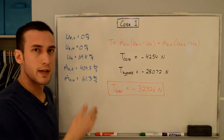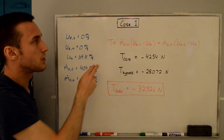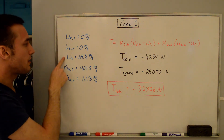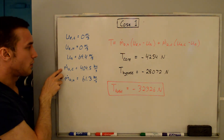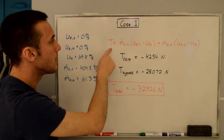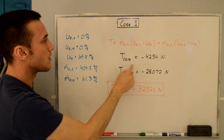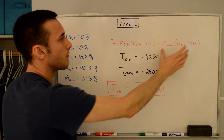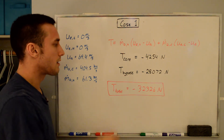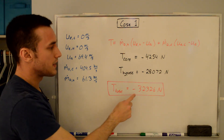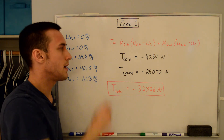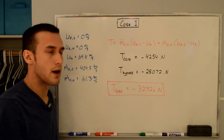Going through case one: both streams are deflected, so exit velocities are zero for both, flight velocity is 69.4 m/s, and the mass flow rates are 61.3 kg/s for the core and 404.5 kg/s for the bypass. Plugging into the thrust equation, the core thrust is negative 4,254 Newtons and the bypass thrust is negative 28,072 Newtons, giving a total thrust of negative 32,326 Newtons. Both the core and bypass produce negative thrust, helping to slow down the aircraft.